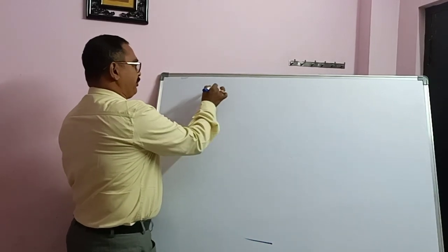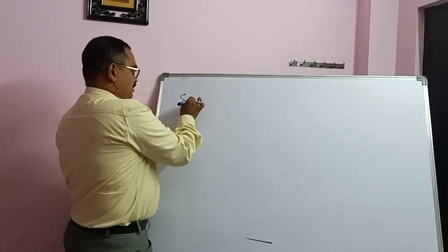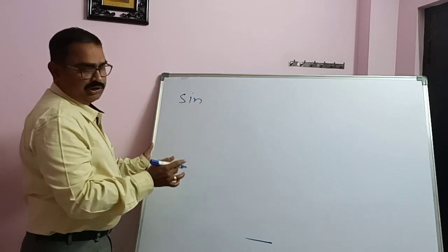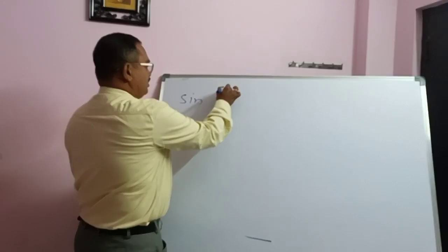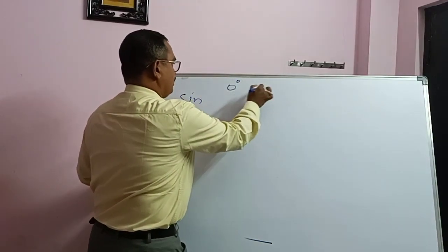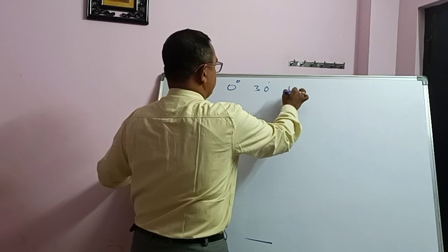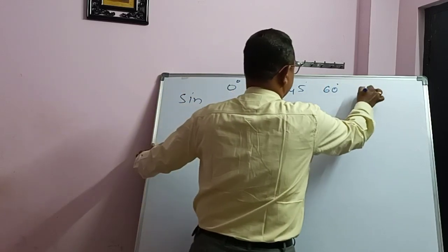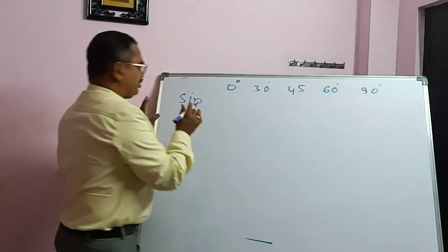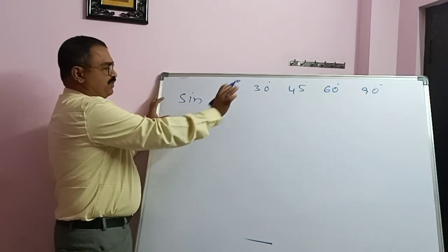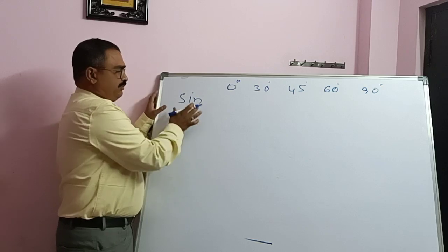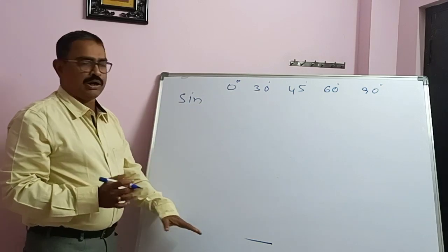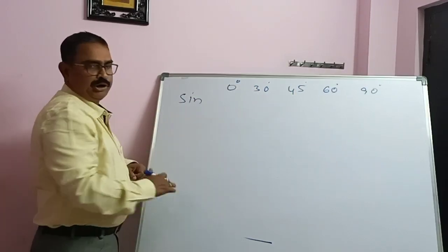First, we have to prepare sin theta, then we can get all the values for all the ratios — sin 0 degrees, sin 30 degrees, sin 45 degrees, 60 degrees, and 90 degrees. If we prepare values for sin theta, automatically we can draw the entire trigonometric table.